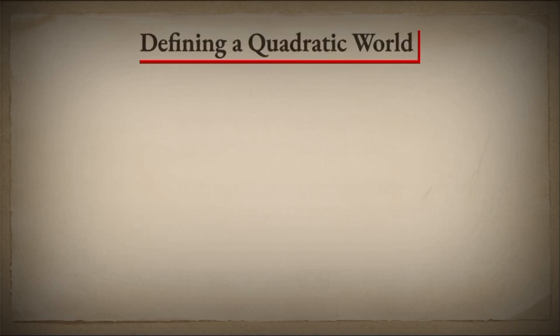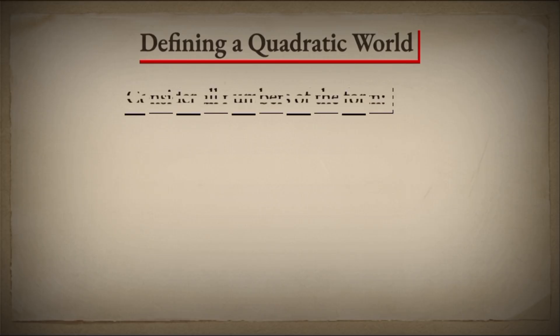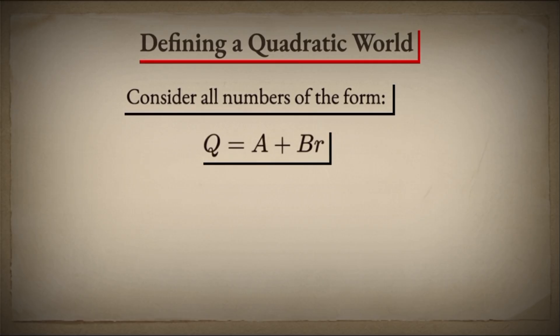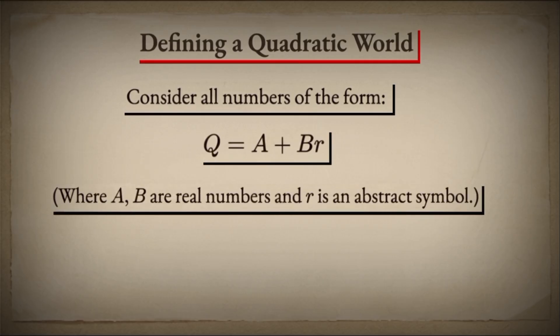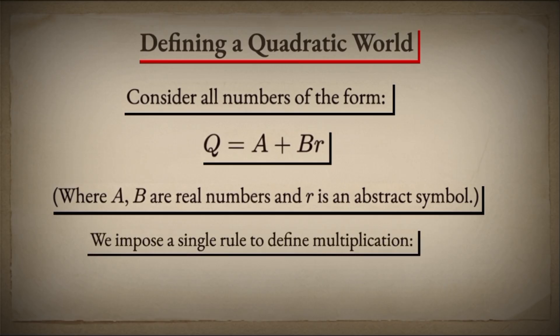We begin with our first quest: solving quadratic equations. To do this, let's invent an abstract symbol — we'll call it R. Our new numbers will have this form: Q equals A plus B times R, where A and B are ordinary real numbers. But R is something new, something undefined. We have the power to give it meaning. So let's impose a rule, a rule that will serve our quest.